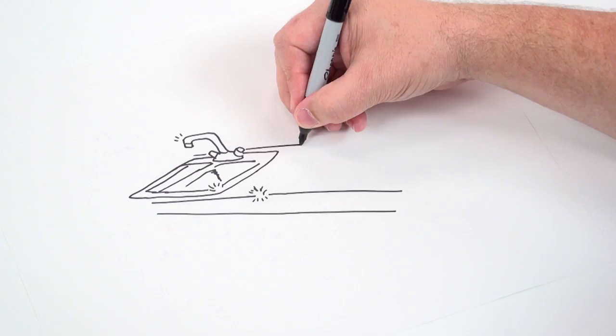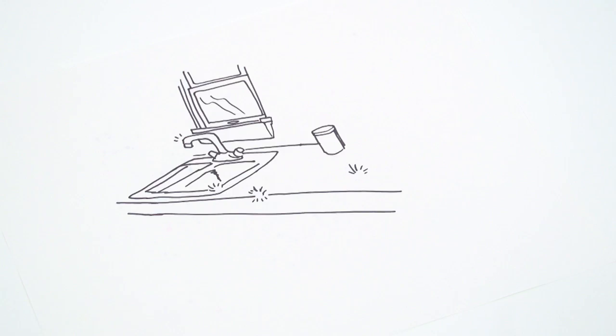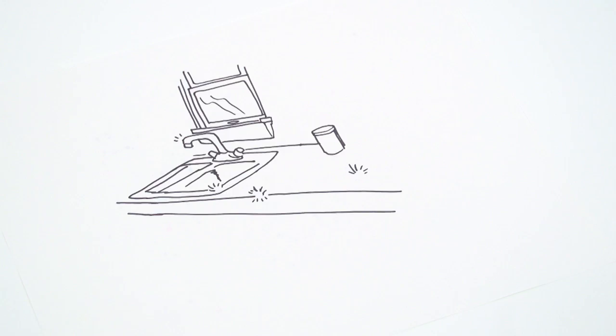To wipe out an existing moth infestation, you can use planks of cedar. Moths are repelled by the natural cedar scent and will vacate the area where it's the strongest.